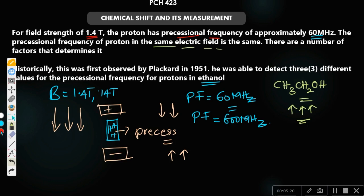The first man to carry out this experiment was Placard in 1951. He found that for ethanol, CH₃ came out different, CH₂ came out different, and the OH proton came out different. So the protons in CH₃, CH₂, and OH each gave distinct signals, showing we can use this to determine the nature of protons in a particular compound.